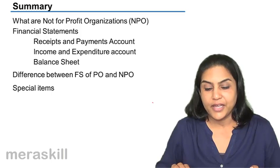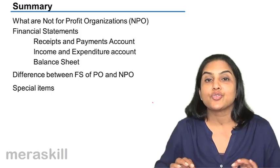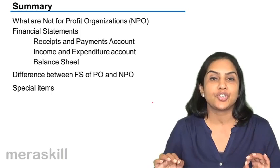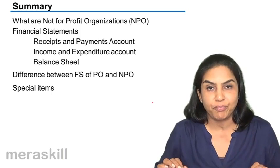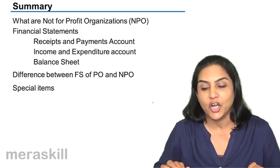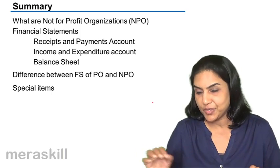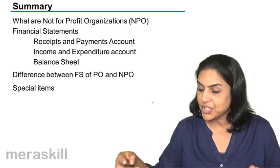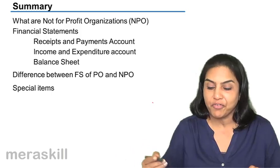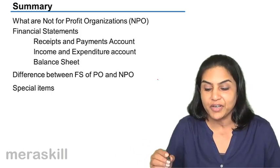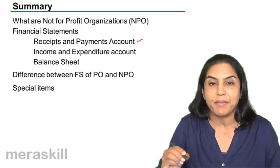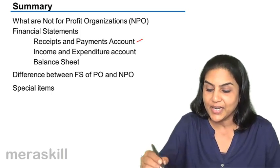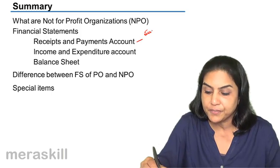There is no capital, there is no profit, and there is no distribution of profit in a not-for-profit organization. The financial statements or final accounts consist of a receipts and payments account, which is a summary cash book.